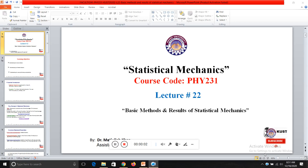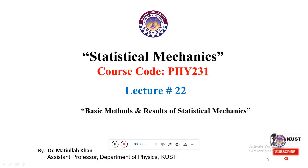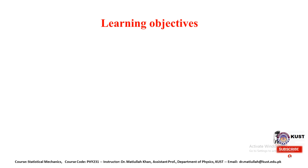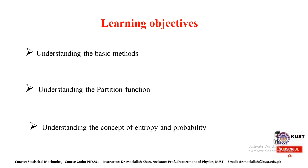Today's lecture we will be talking about Basic Methods and Results of Statistical Mechanics. This is a new chapter from the course outline of Statistical Mechanics, having the course code PHY231. In today's lecture our basic objective is to understand the basic methods used in Statistical Mechanics, the Partition Function and its use, and finally the concept of Entropy and Probability and their use in Statistical Mechanics.